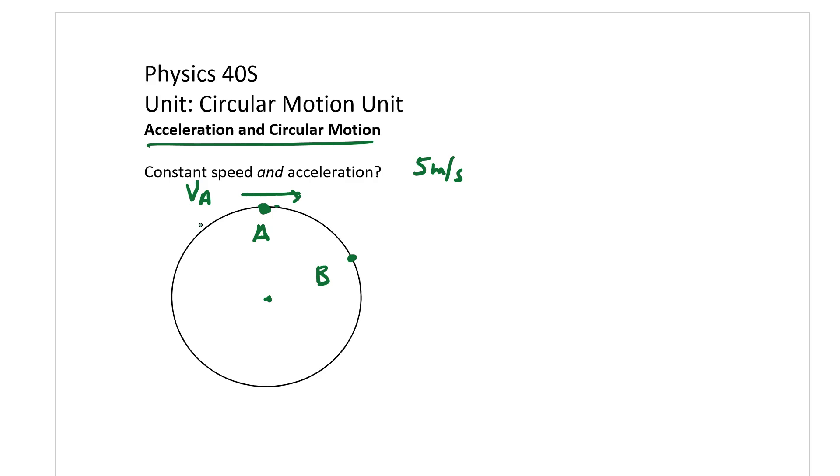How about at point B? Well at point B it would be going about this direction, about 90 degrees to that radius, so this would be at point B. You'll notice that the direction is changing for the velocity, and so therefore just by a simple definition, what is acceleration? Acceleration is the change in velocity.